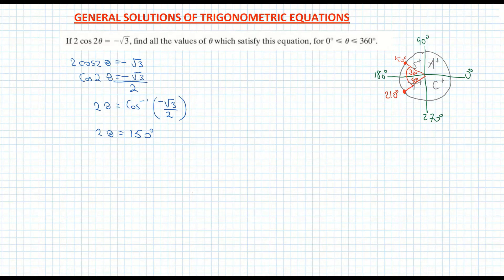So there's my two angles that can be representative of 2 theta. So I'm just going to write that down now. So I have, so therefore, 2 theta is equal to 150 degrees. And I also have 2 theta is equal to 210 degrees.